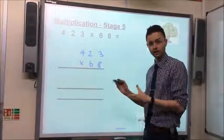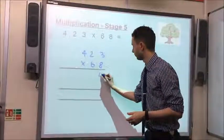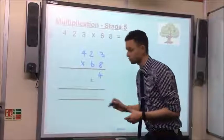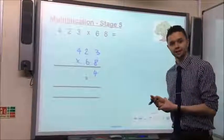So 8 ones multiplied by 3 gives us 24. The 4 is recorded in that column and a little 2 goes underneath just so we remember to carry it over.